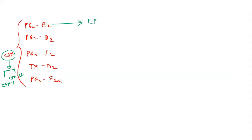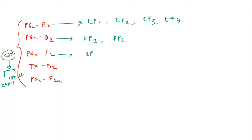Now let's look at the receptors for these prostaglandins. For prostaglandin E2, there are four types of receptors: EP1, EP2, EP3, and EP4. For prostaglandin D2, there are two receptors: DP1 and DP2. For prostaglandin I2, there is one receptor: the IP receptor. For thromboxane A2, there are TP receptors with two subtypes: TPα and TPβ. For prostaglandin F2 alpha, there are FPa and FPb receptors.